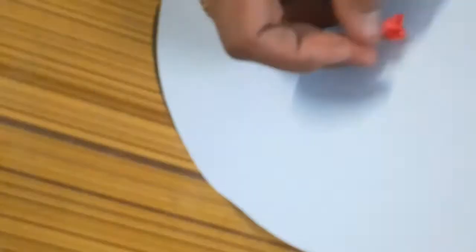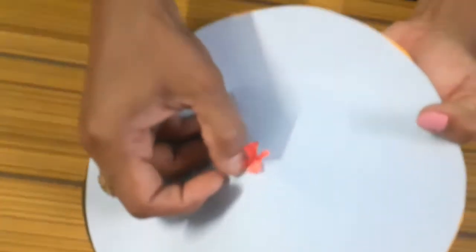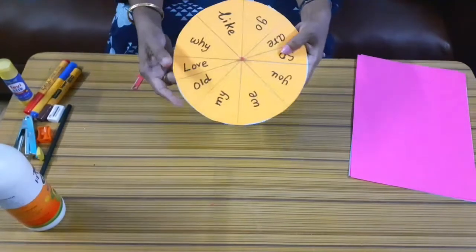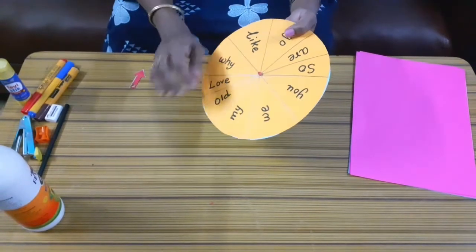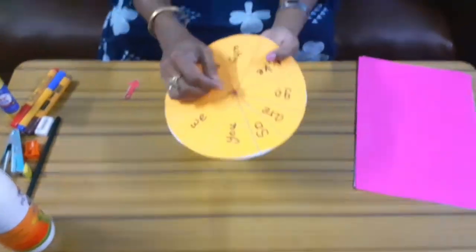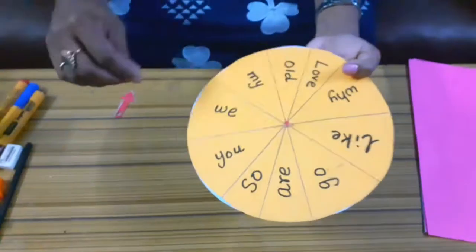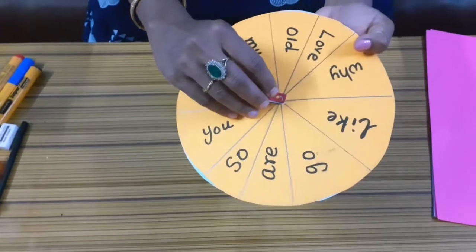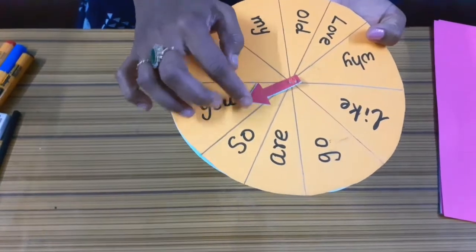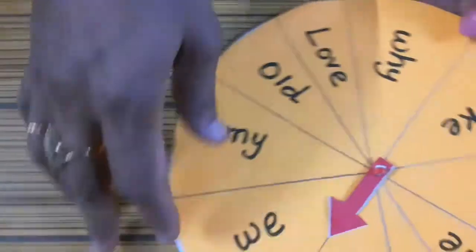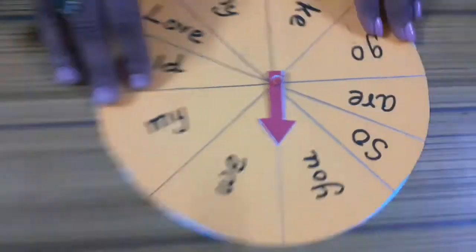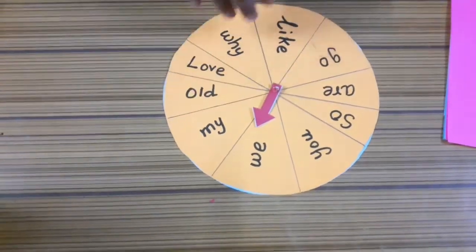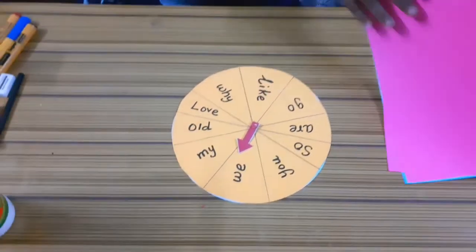Now I have fixed it like this. Next apply some glue at the back and paste it. Now we have written the sight words in this circle and we have fixed a small roll of paper in the center. Now you fix an arrow, cut a piece of arrow using the chart paper.